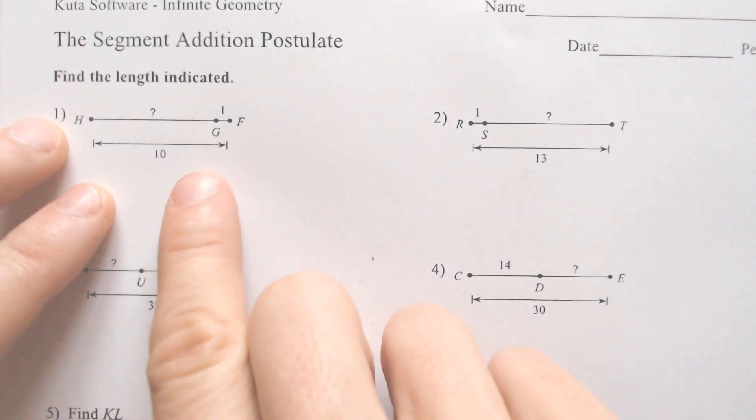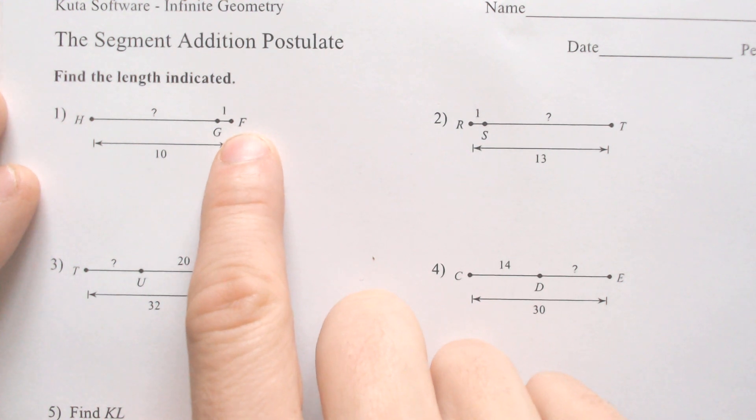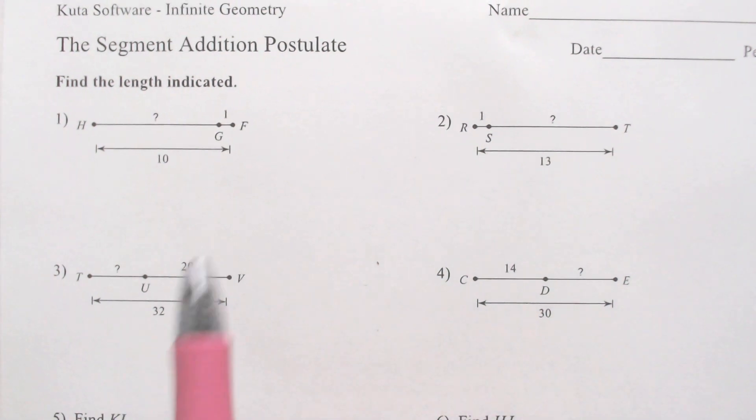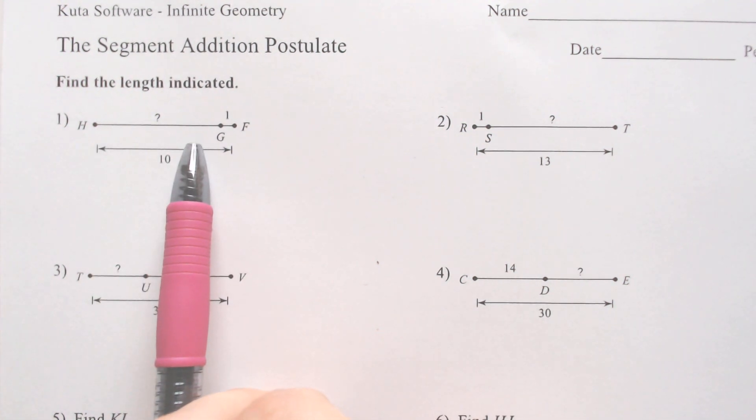The segment addition postulate, by definition, is if you add two smaller portions together, you can get a bigger portion. And with these easy problems, you can maybe just kind of logic your way through it.